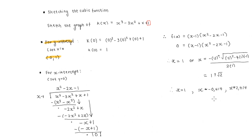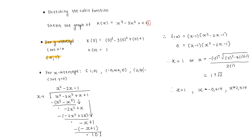Written in coordinate form, our x-intercepts are at (1, 0), (negative 0.414, 0), and (2.414, 0).